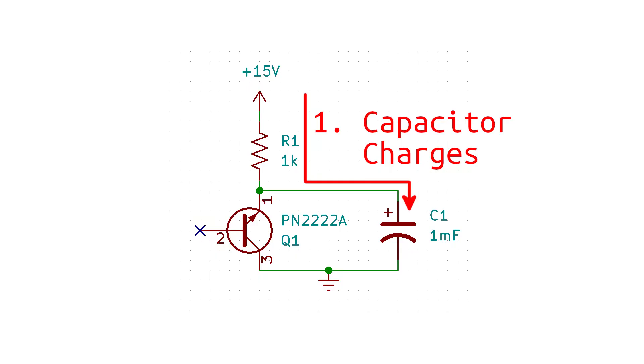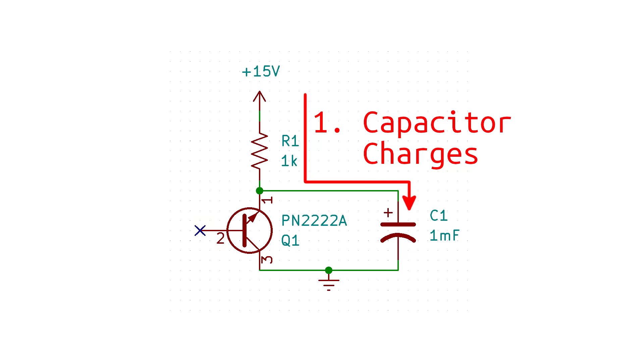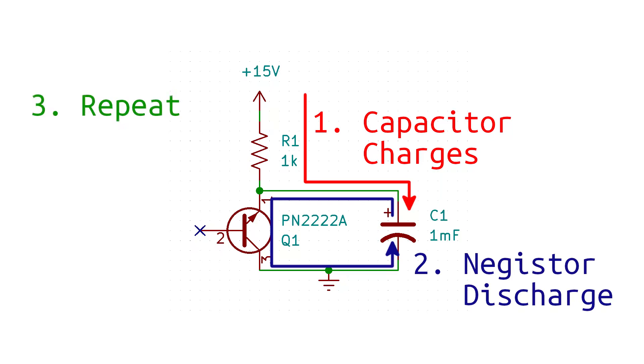This whole circuit works by first charging at the capacitor. Then, once the breakdown voltage is reached, the negister starts its avalanche process and starts conducting at an increasing rate as the voltage drops. That is, until the voltage drops low enough to stop the conduction altogether. Then, the entire process repeats with the capacitor charging up again.